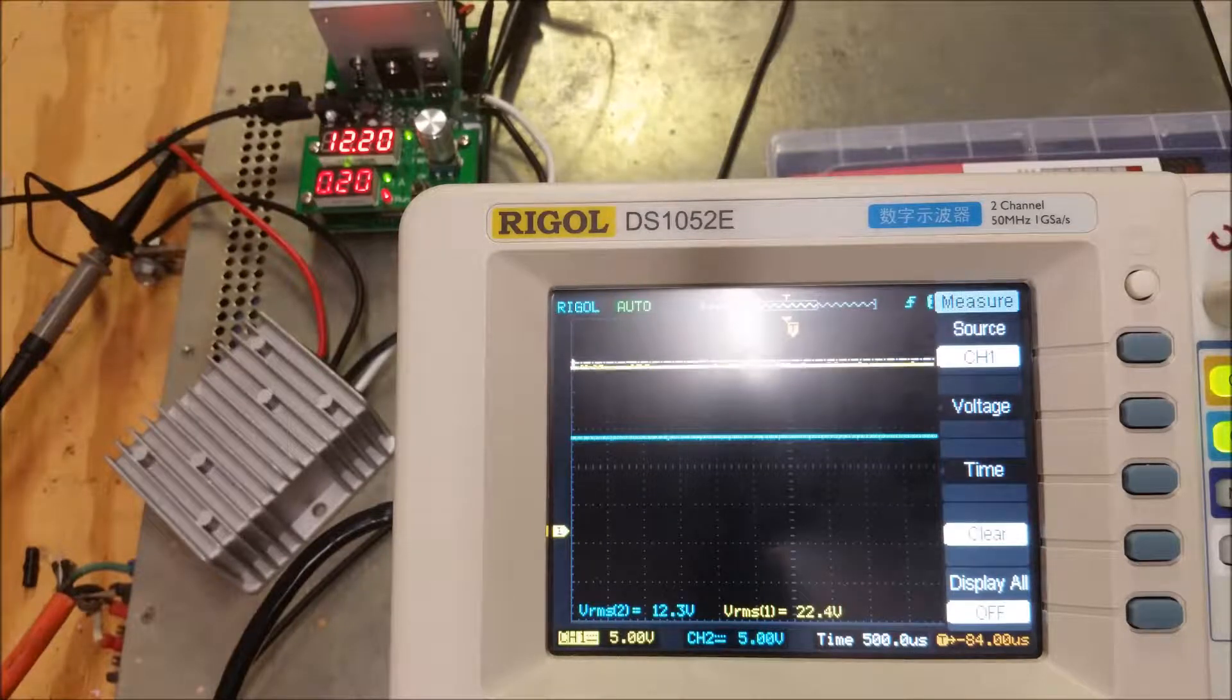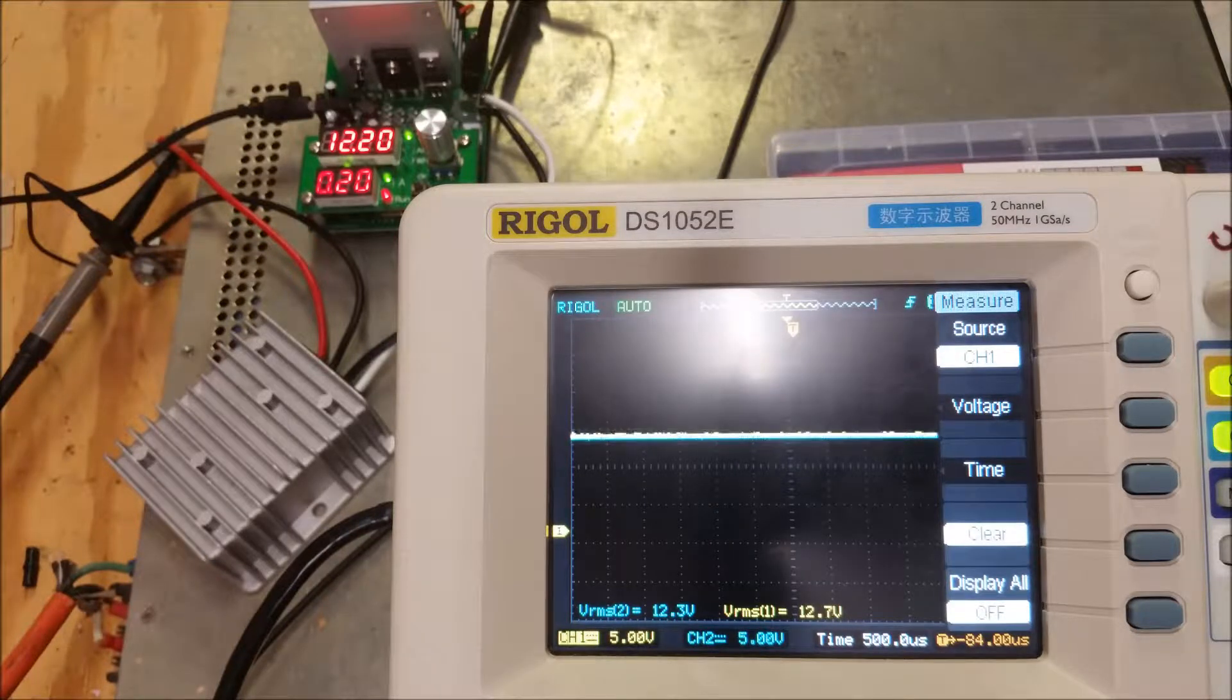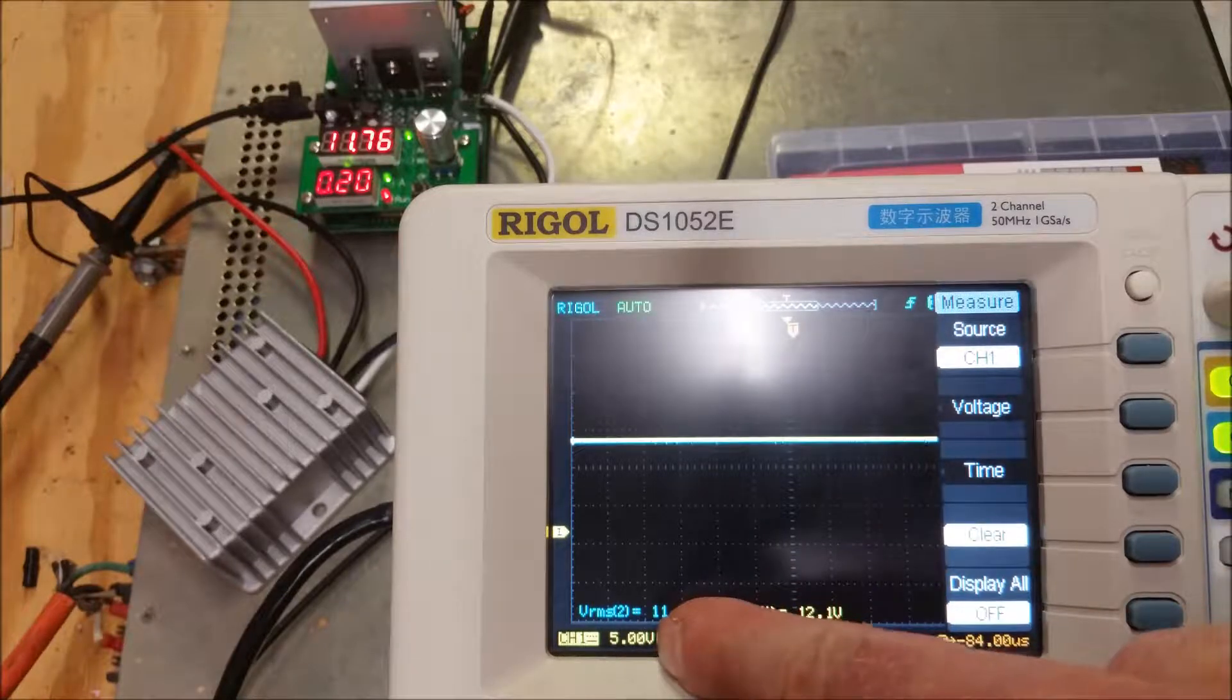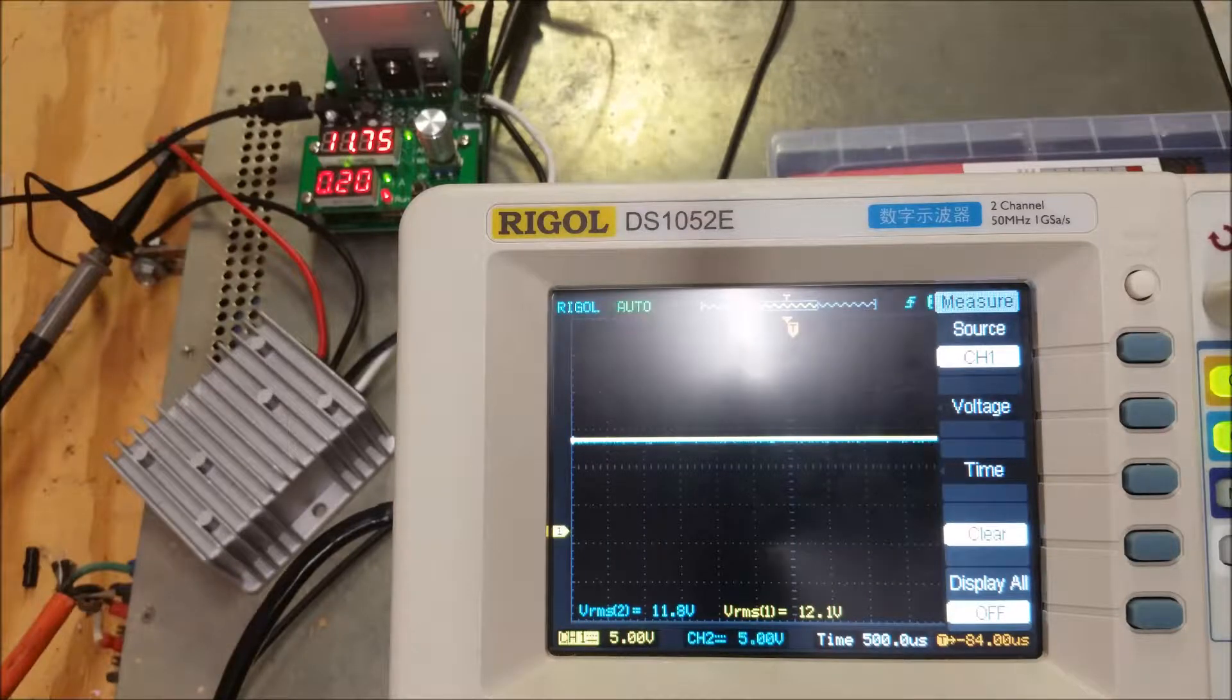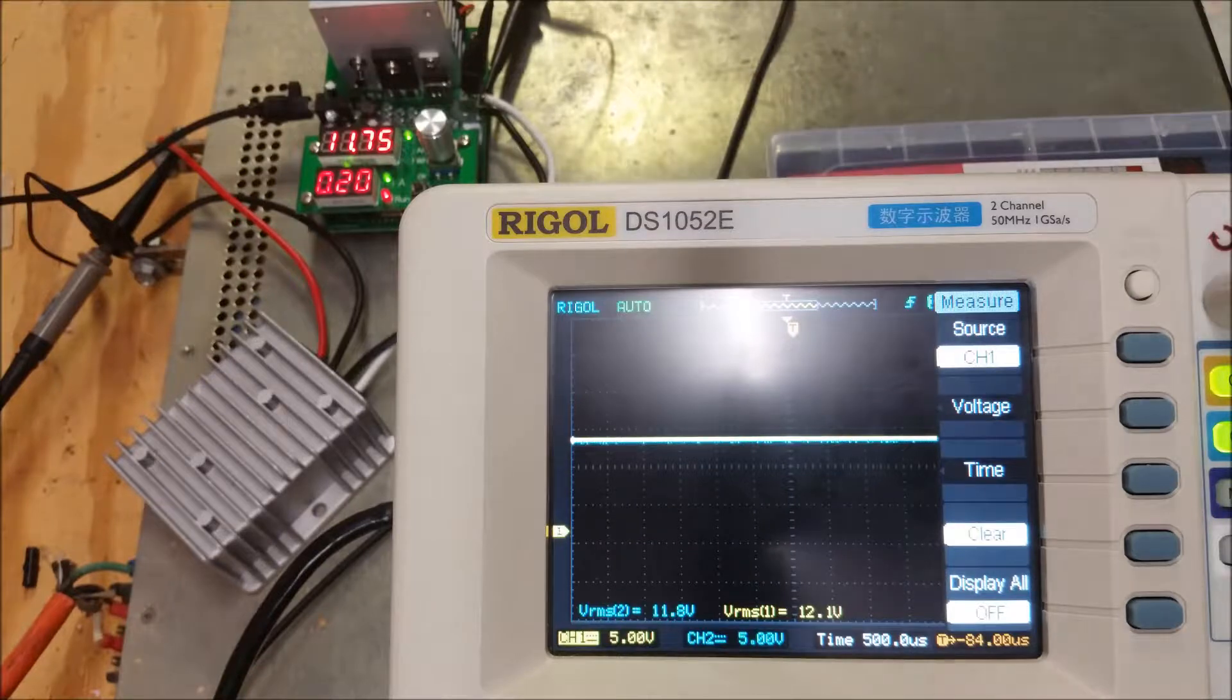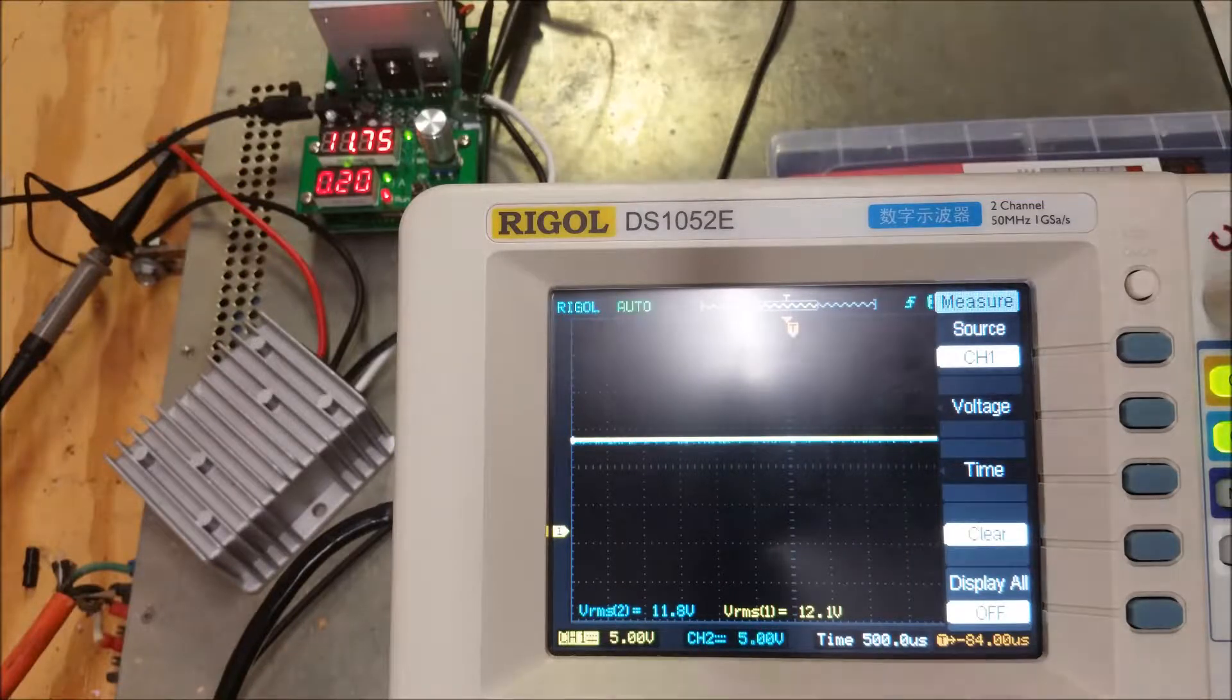So it looks like it will regulate down to about 12.3 or 12.1 volts. Then it starts kind of following, see how it just dropped right there. Then it starts following your input. So 12 volts is about accurate. And again this is at 200 milliamps and roughly 11.75 volts for the power supply output, which is the input to the DC to DC converter.